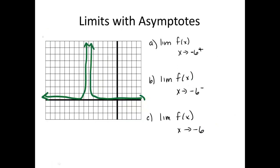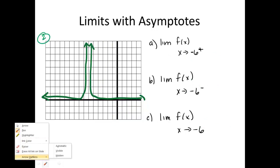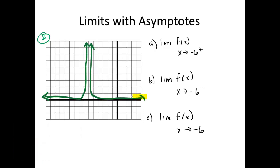Alright, example number two. Starting on the right hand side, I'm following the graph and it looks like it's going towards positive infinity from the right side. Going from the left side, it also goes towards positive infinity. Since both of these paths are leading towards the exact same thing, when I approach negative six with no direction left or right, I end up approaching positive infinity.